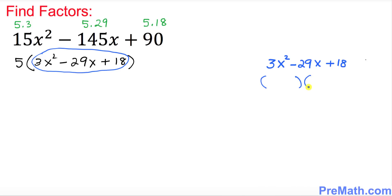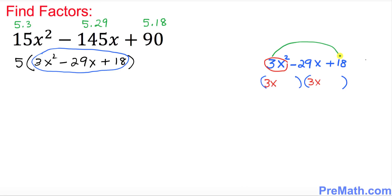I'm going to put two parentheses. Here's an easy way: look at only 3x — ignore the exponent — and put down 3x in each parenthesis. The next step is to multiply the end numbers: 3 times 18.